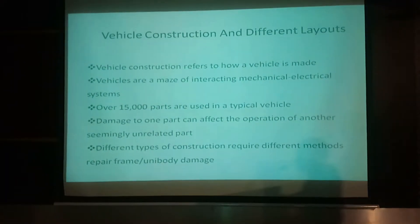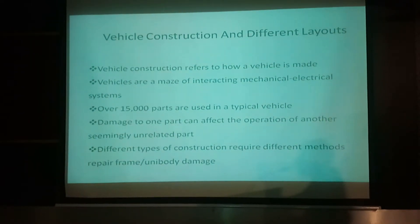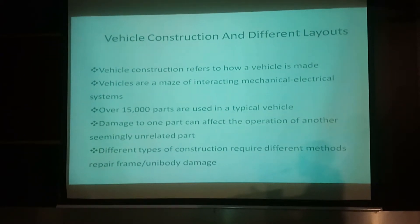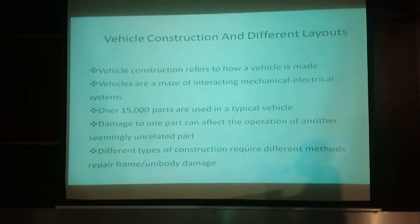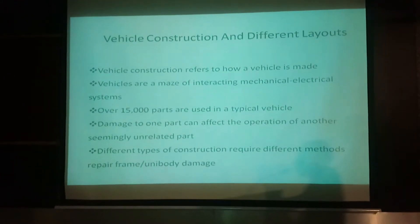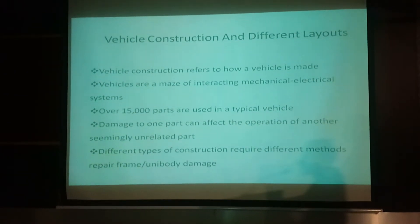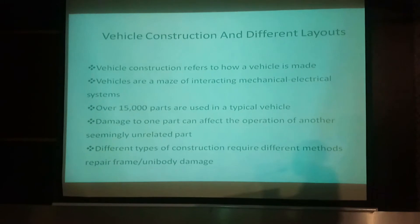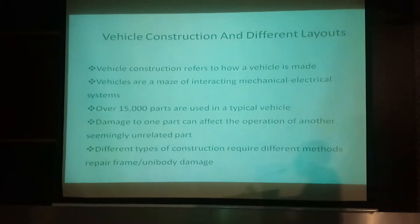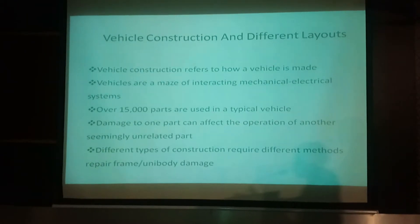Next one, vehicle construction. The vehicle construction refers to how a vehicle is made — that is, the interactive mechanical and electric systems. This vehicle consists of about 50,000 parts at the maximum and a minimum of 2,000 parts. Damage to one part can affect the operation of another seemingly unrelated part.